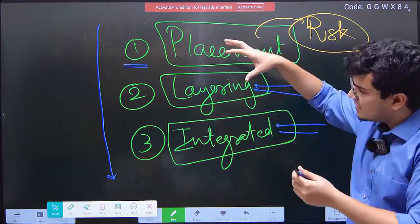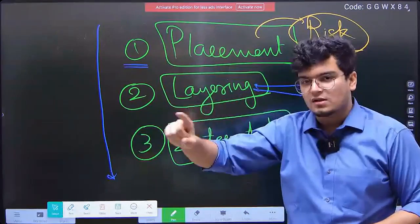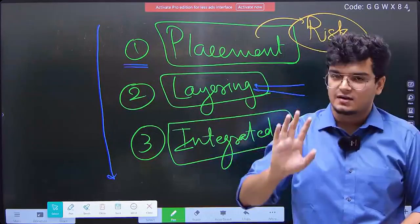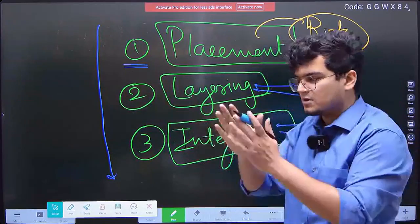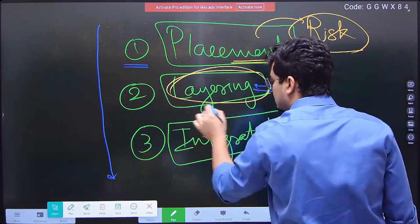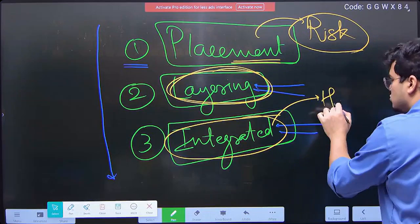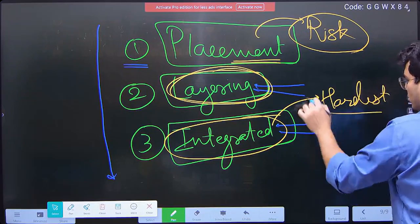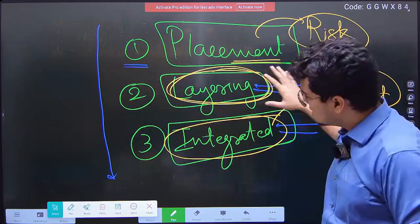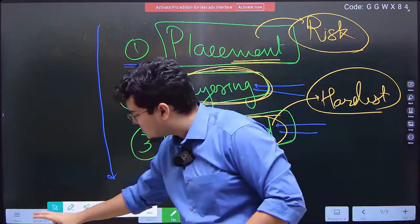At the placement stage, you are just breaking the sum down — that is why risk is maximum there. Layering is the second stage and integration is the last stage. Integration is the hardest to catch because by then the money has almost become legitimate. So these are the three steps of money laundering: placement, layering, and integration.